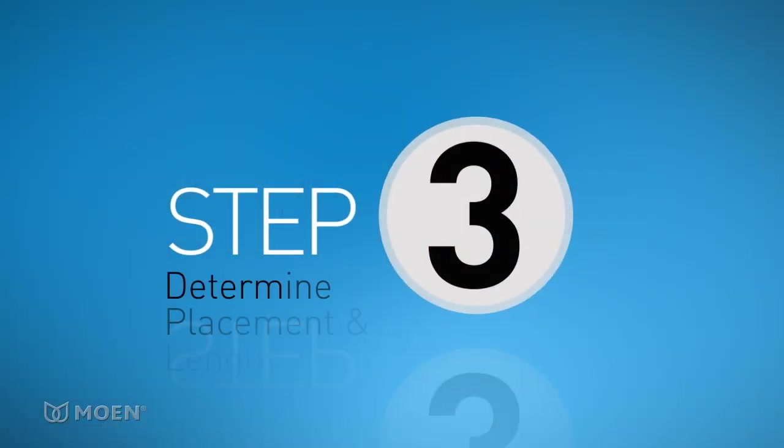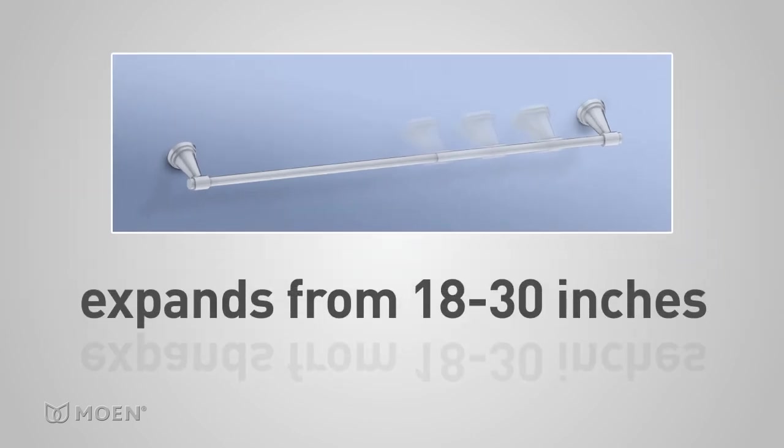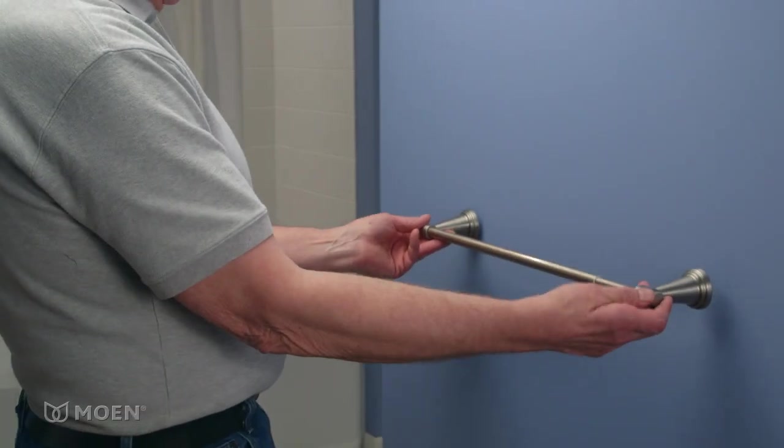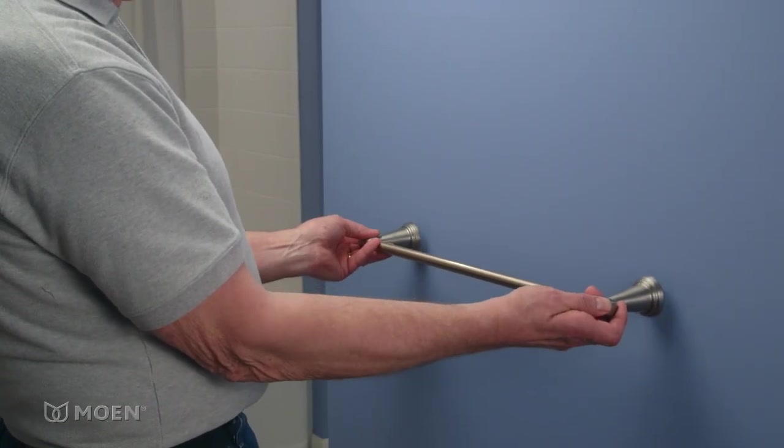Step 3: Determine placement and desired length. The Moen adjustable towel bar expands from 18 to 30 inches to fill any wall space. Decide where to install the towel bar and what length best fits your available wall space.